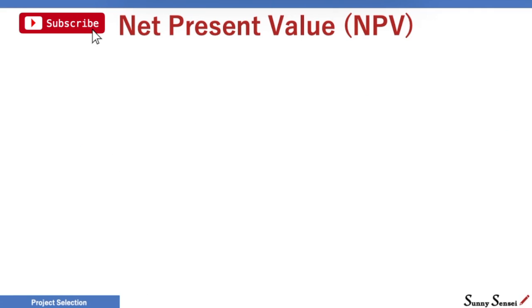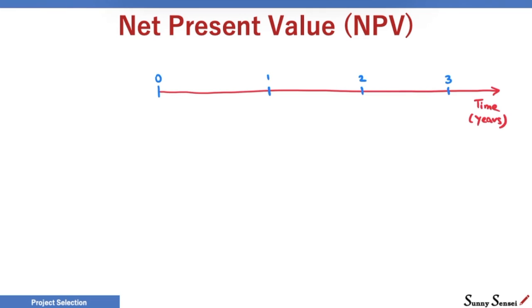We are considering a project that will last 3 years. We have to buy some equipment immediately. This will cost $1000. This is a cash outflow. We call this negative cash flow. We use the minus sign to indicate the outflow.